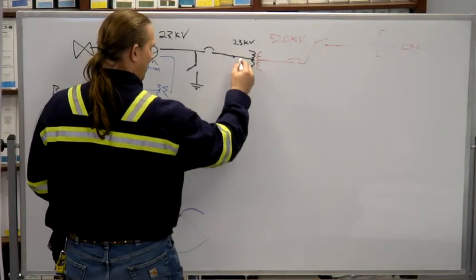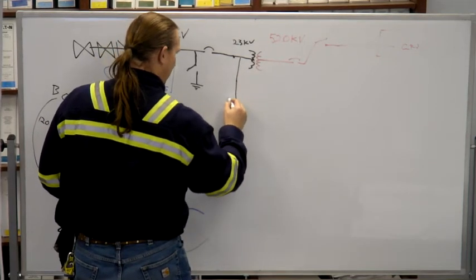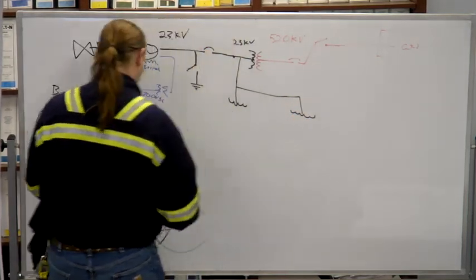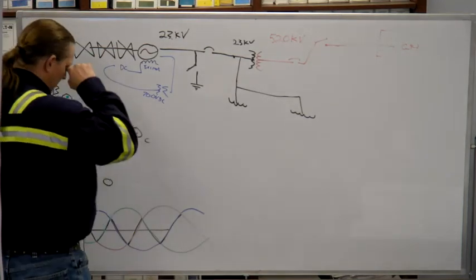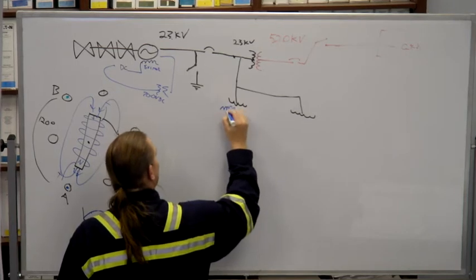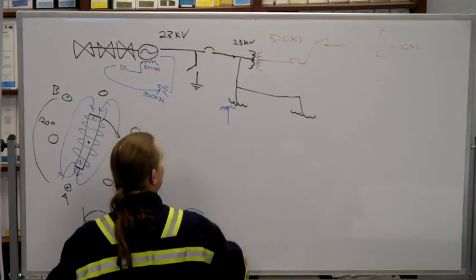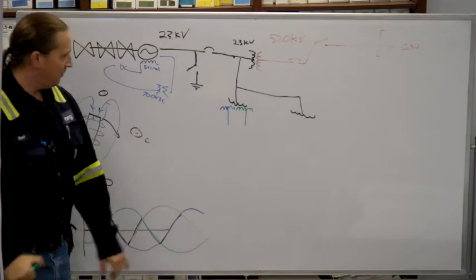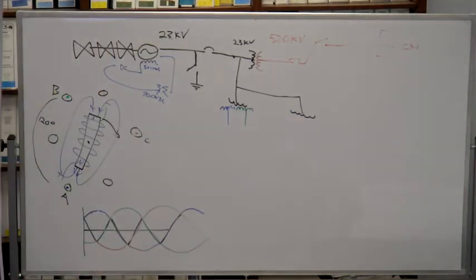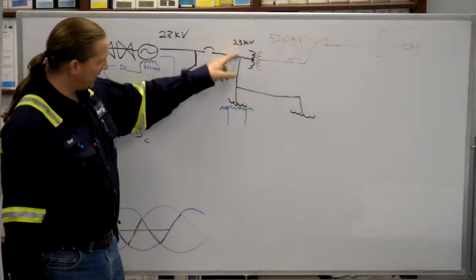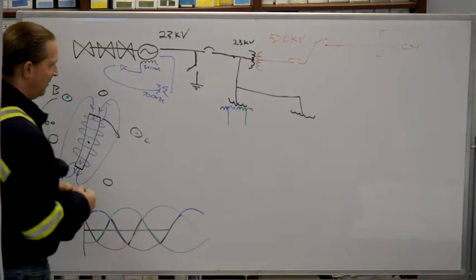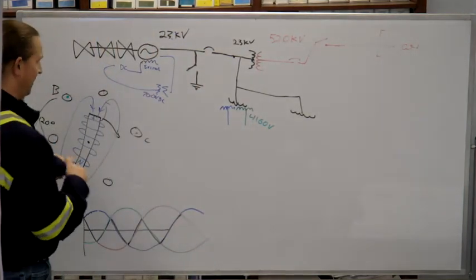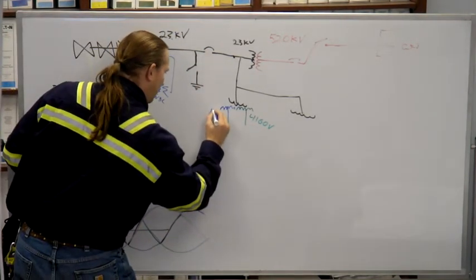So this 23,000 comes down and goes to another set of transformers. We call these the auxiliary transformers, there's two of them. The high side is 23,000 and we're stepping it down to what? 4160 and 13.8. 4160 and 13.8 kilovolts.